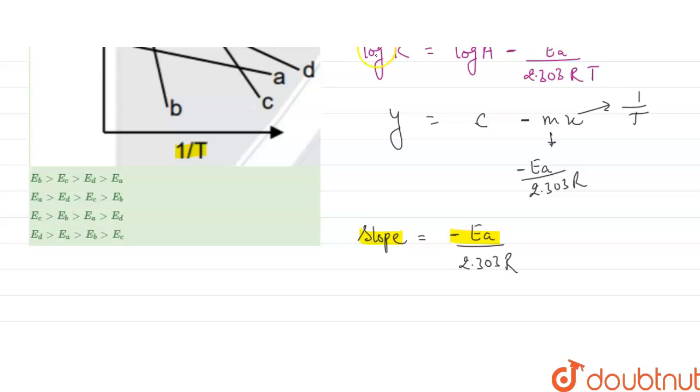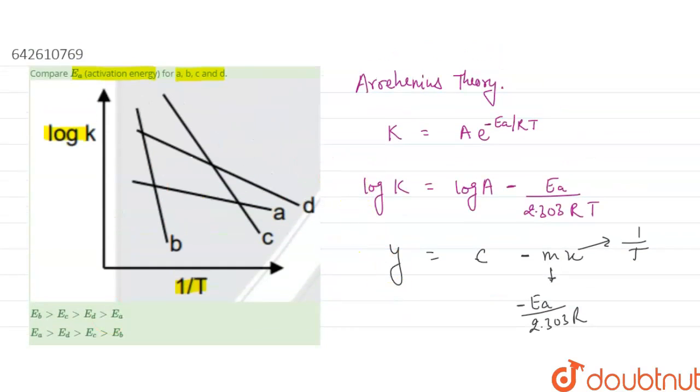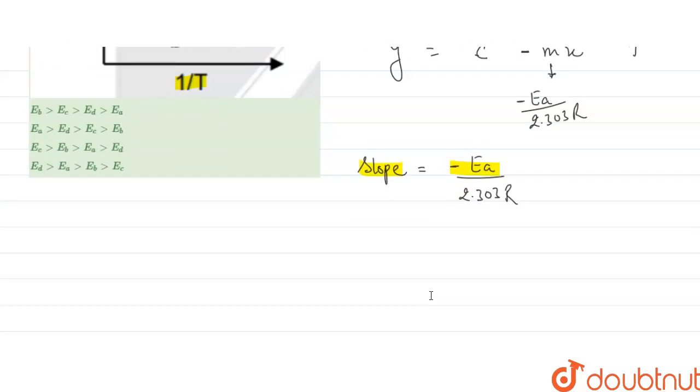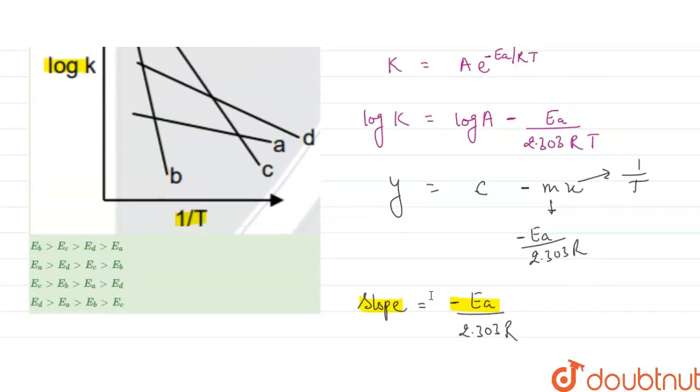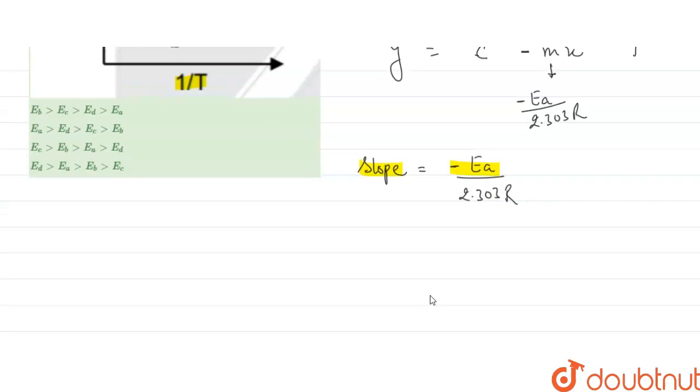For the slope, we can see the slope of B. According to the graph, if we see here, slope of B will be minimum, so the activation energy in B will be the maximum. So here comes E of B will be greater than.